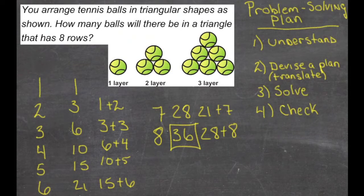three plus three is six, six and four is ten, ten and five is fifteen, fifteen and six is twenty-one, twenty-one and seven is twenty-eight, and twenty-eight and eight is thirty-six. Looks like we got our math right. Thirty-six in row eight is going to be our answer.